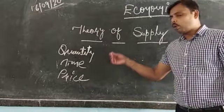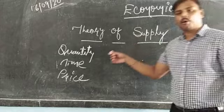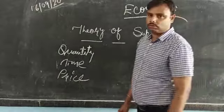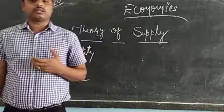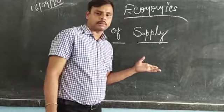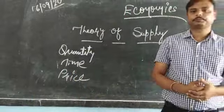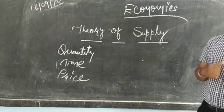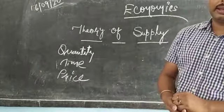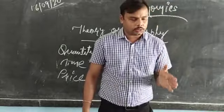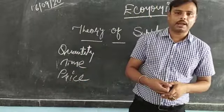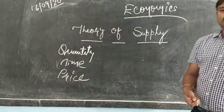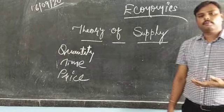The definition of Supply states: the quantity of a commodity that is supplied at a particular point of time at a particular price which the seller or manufacturer entertains. In Demand there was an inverse relationship between price and demand, but in Supply there is a positive relation. As the price of the commodity rises, there will be more supply.